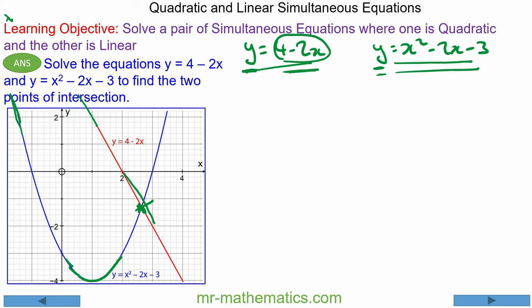So we have 4 minus 2x is equal to x squared minus 2x minus 3.